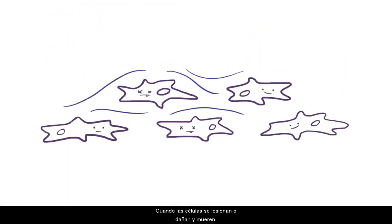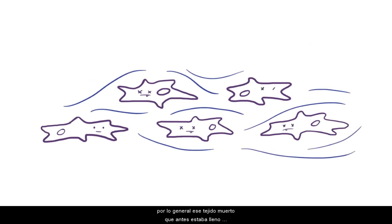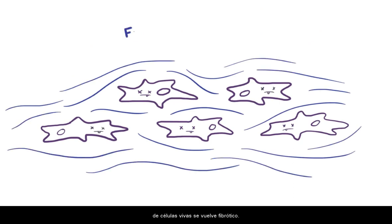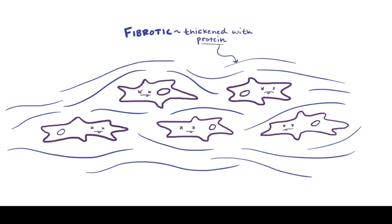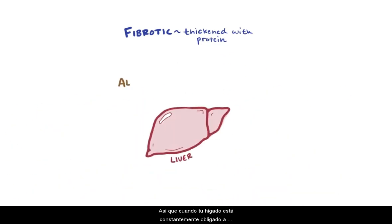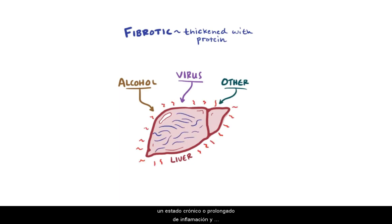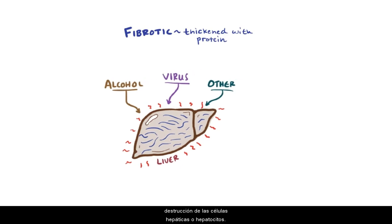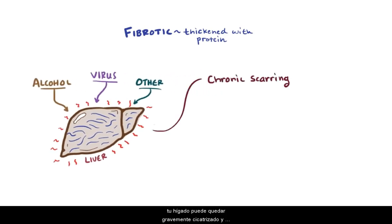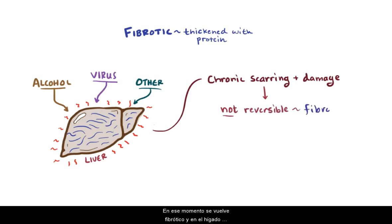When cells are injured or damaged and die off, usually that dead tissue that was previously full of living cells becomes fibrotic, meaning it becomes thickened with heaps of protein and forms scar tissue. So when your liver is constantly forced to process alcohol, like in alcoholic liver disease, or subject to a viral attack for a long time, like HBV, or anything else that causes a long-term or chronic state of hepatocyte destruction and inflammation, your liver can become seriously scarred and damaged to the point where it's no longer reversible, at which point it becomes fibrotic — and in the liver we call this process cirrhosis.